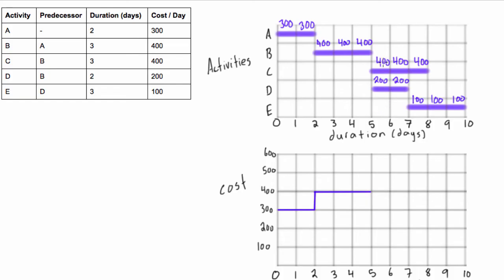Looking at day six here, we have $400 and $200, and same with this one, $400 and $200, so that's a total of $600. So we're going to jump again, jump up to $600 now, and that will be for two days.